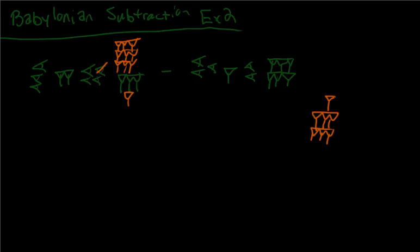Alright, let's go to our next place. So we now have three of these tens places, and we're trying to take away two. Well, three minus two is one. So we have one of those left.